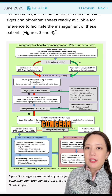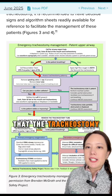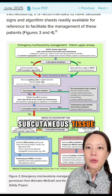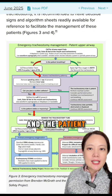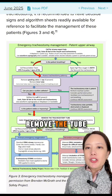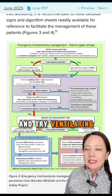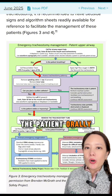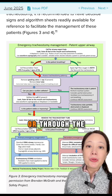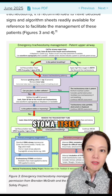If there is concern that the tracheostomy is in the subcutaneous tissue and the patient is not ventilating, remove the tube and try ventilating the patient orally while occluding the stoma, or through the stoma itself.